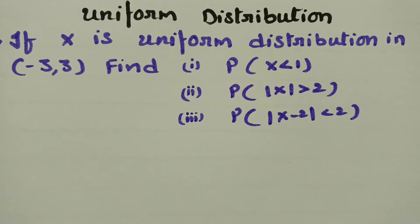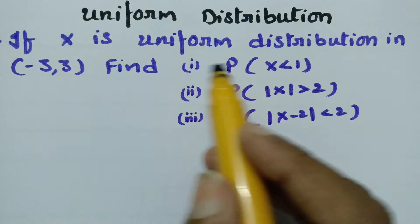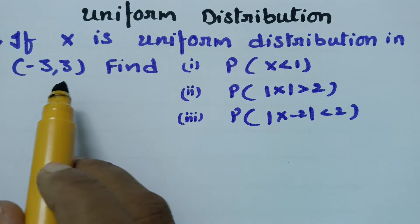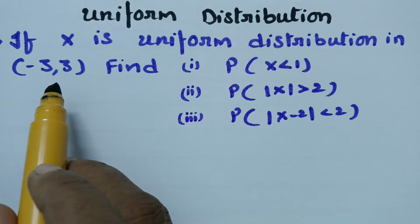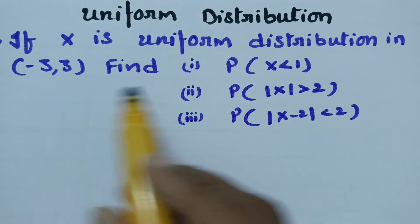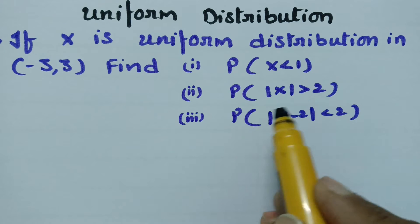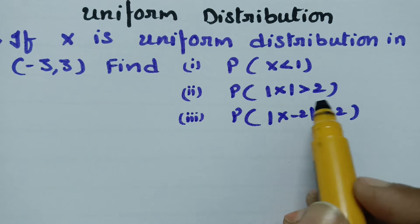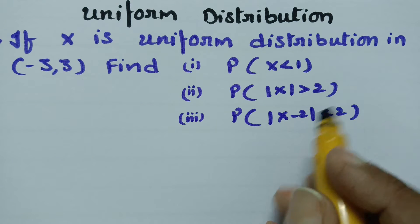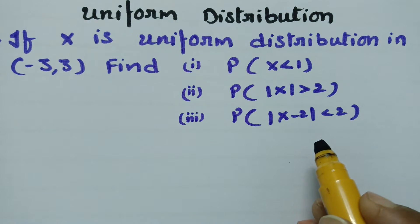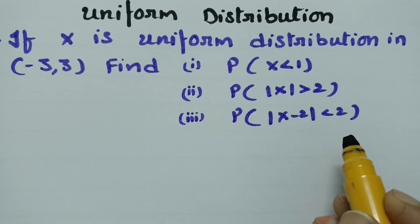This video is on uniform distribution. The problem is: if X is uniformly distributed in the interval (-3, 3), we have to find the probability of X less than 1, the probability of |X| greater than 2, and the probability of |X - 2| less than 2.